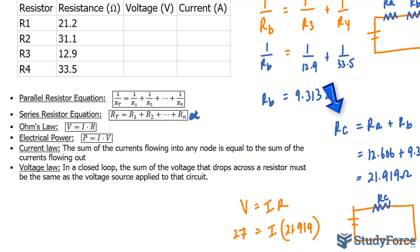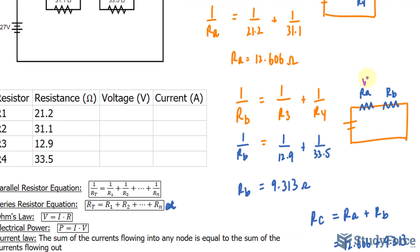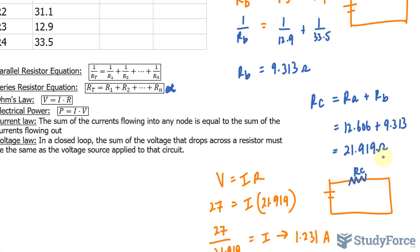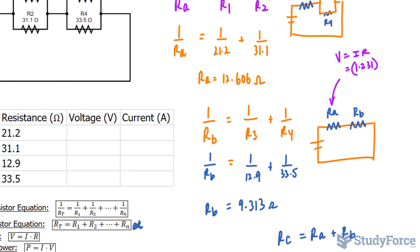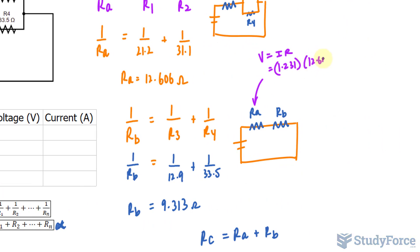So focusing in on RA, we found out that its resistance was 12.606. So using Ohm's law again, voltage is equal to IR. I'll take the current that is flowing through RC, which we found to be 1.231, and I'll multiply it by the resistance of RA, which I found earlier to be 12.606. And this will tell me the voltage reading at RA.